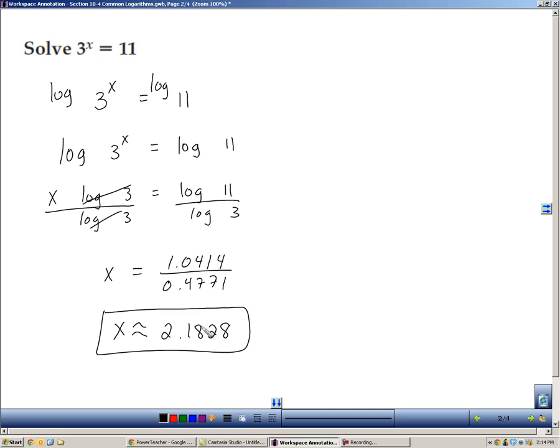Now one thing you can do to check this answer is just think about it logically. Well, 3 to the second power is 9, and 3 to the third power is 27. And since 11 is somewhere between 9 and 27, then that means this has to be 3 to the 2 point something. So you can at least get an approximation of where it needs to be. So 2.1828 seems reasonable.